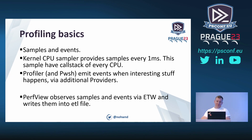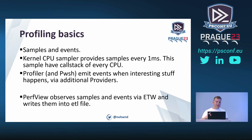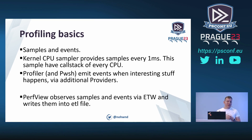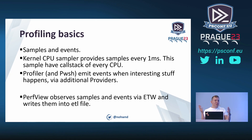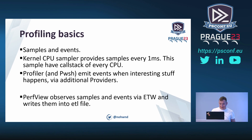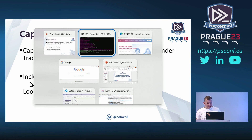Some profiling basics: there are basically two approaches — samples and events. Samples happen at a given time interval; for example, the kernel CPU sampler provides a sample every one millisecond of what is running on every core. Events happen when interesting things occur — so if your function is not doing something for 10 seconds you get one event at the start and one at the end. When you combine both, you get metrics that PerfView can observe through ETW — Event Tracing for Windows — which writes them into ETL files that you then browse using the tool.